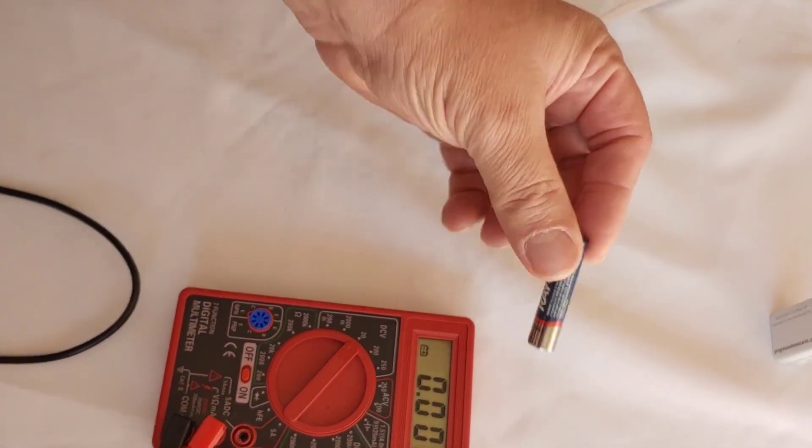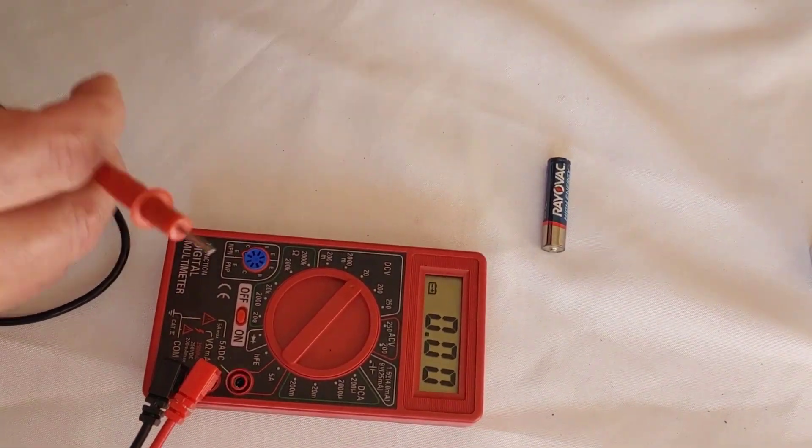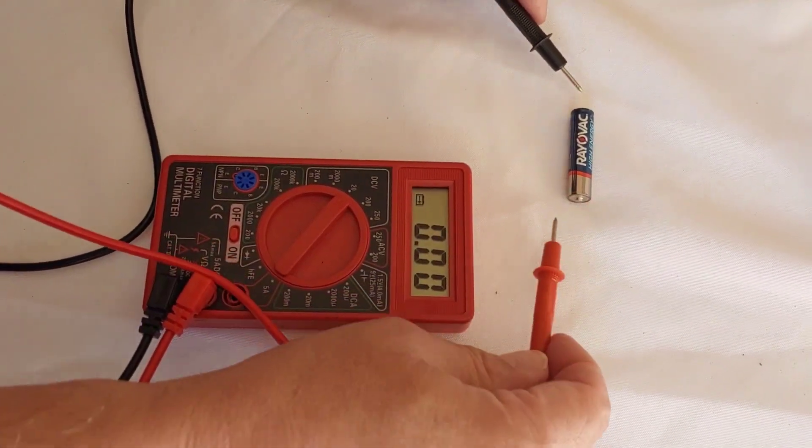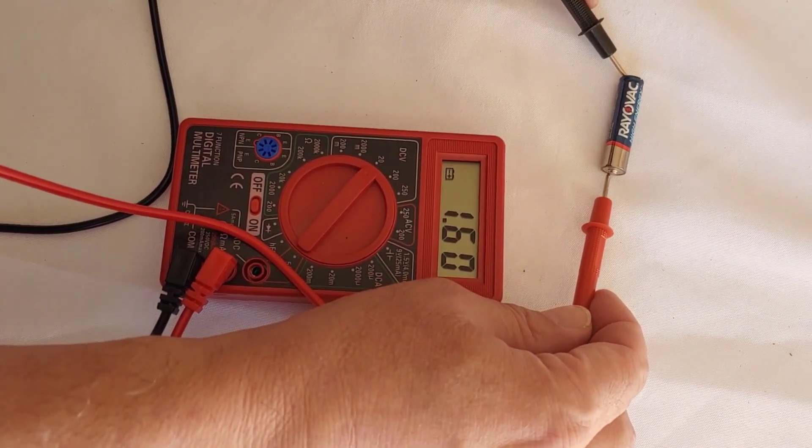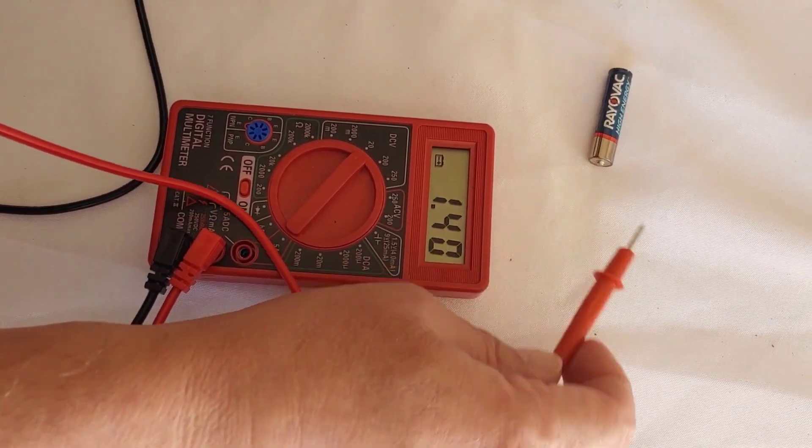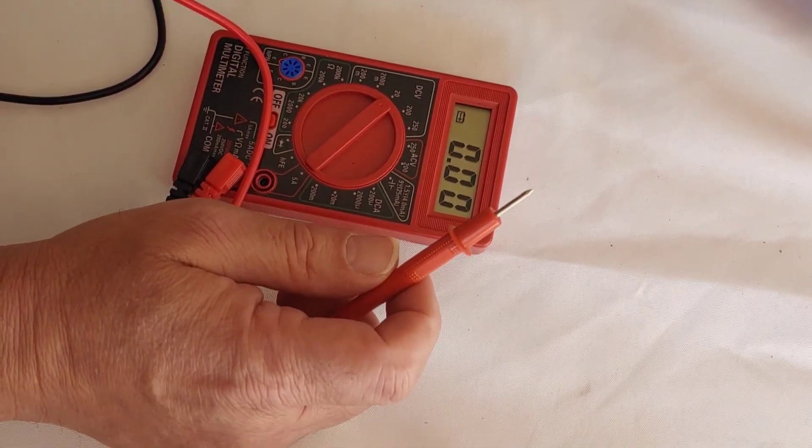We'll take them off. Let it go back to zeros. Take a little battery here. Do the same thing. Put positive and negative. This is 1.60. So that means this one is fully charged.